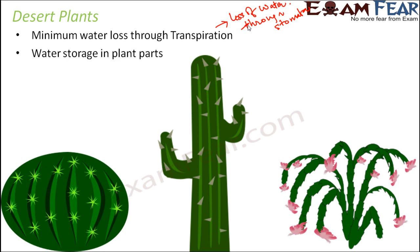Second, water storage in plant parts. In these plants there are certain parts that help to store water — for example, the stems. Stems are covered with a thick waxy layer which helps to retain water. Some plants store water in their leaves or roots. So different plant parts help to store water, which is not true for normal plants. Normal plants have excess water inside them and that is why they release that excess water through transpiration.